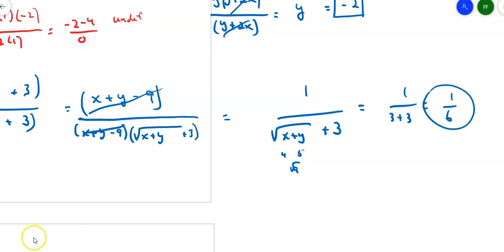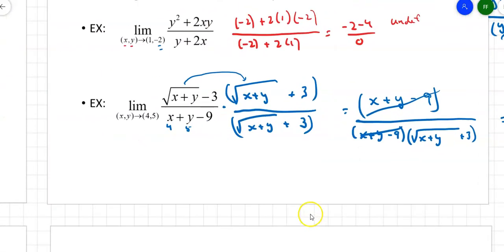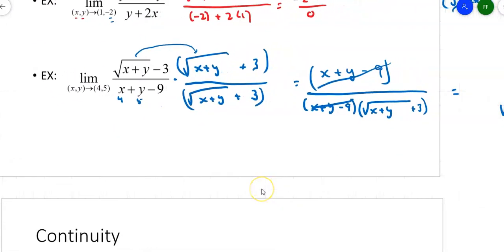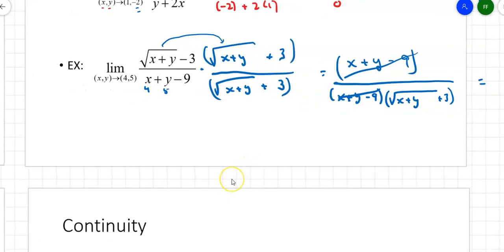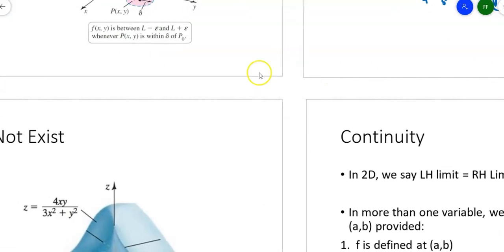Some of those techniques you learned in Calc 1, multiplying by a conjugate—this one, if you happen to see that you could factor that bottom as (radical x plus y minus 3)(radical x plus y plus 3), you could have looked at it that way too and just canceled top and bottom. So factoring is another way to do it. Simplifying where you can will help you with that.